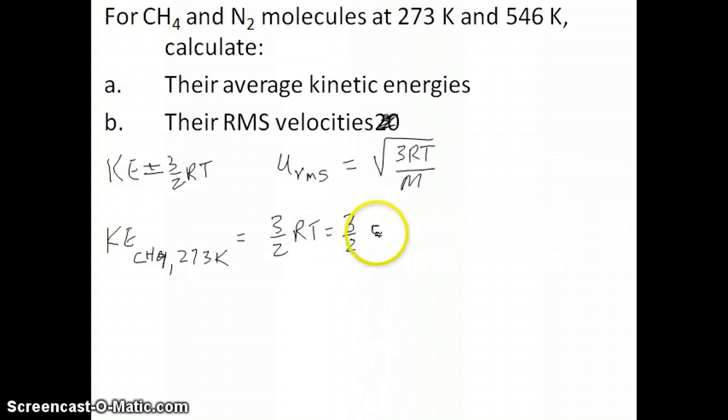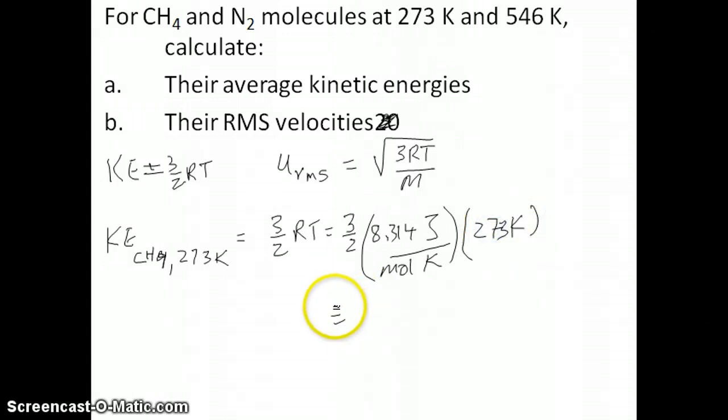joules per mole Kelvin, and it has a value of 8.314 when it's expressed in that unit. And then the temperature is 273 Kelvin, so the Kelvins cancel out together. And what you get at the end would just be a value of about 3404.6 joules per mole. So this would be the energy of a mole of gas at 273 Kelvin.